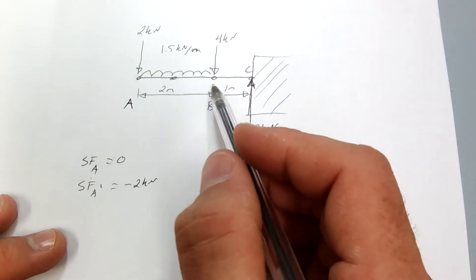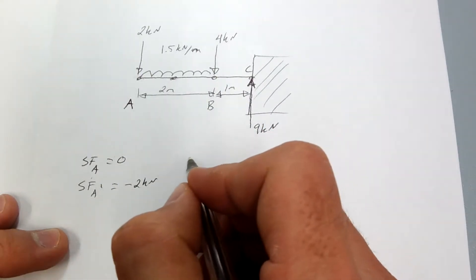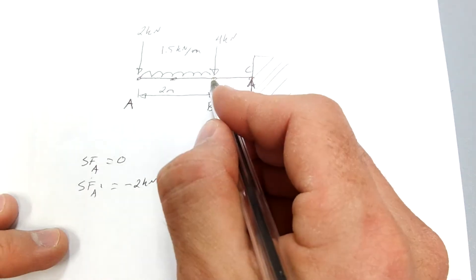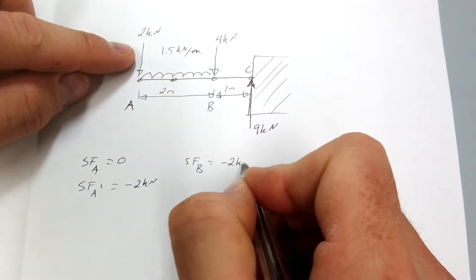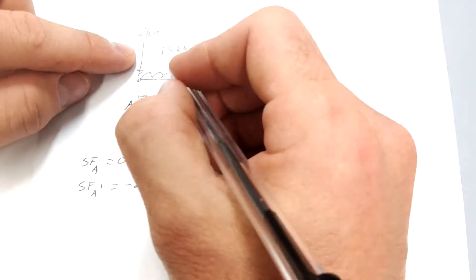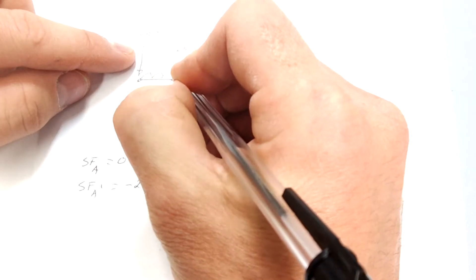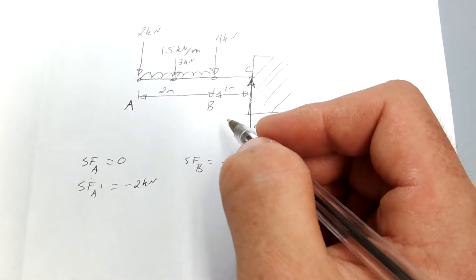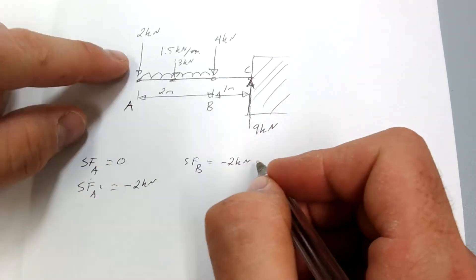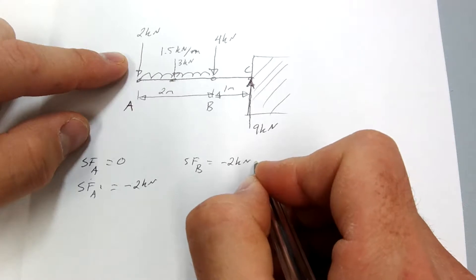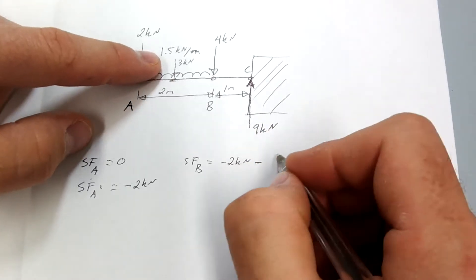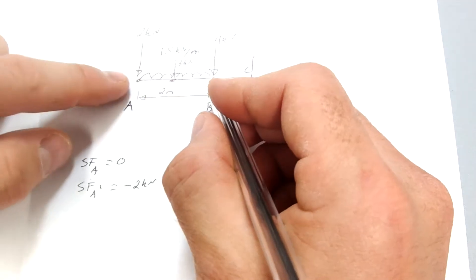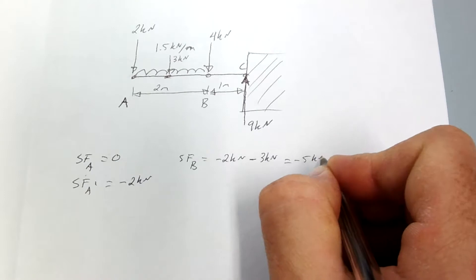Let's move to point B. Just to the left of that point, you have 2 kilonewtons downwards, so negative 2 kilonewtons. This uniformly distributed load acts like a 3 kilonewton force in the middle of the 2-meter section, so you take another negative 3 kilonewtons, giving negative 5 kilonewtons total.